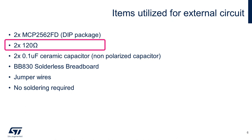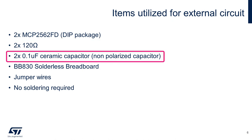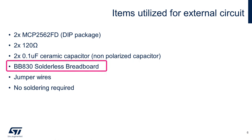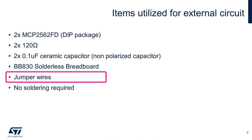Keep in mind that any additional CAN nodes added to the bus — for example node 3, 4, and beyond — will not require any additional resistors. A single 0.1 microfarad ceramic capacitor for each node is used for filtering potential noise on the VDD bus to ground. We'll use a solderless breadboard to place the CAN transceiver, resistors, and capacitors, and jumper wires to connect the Nucleo board and provide power and ground. No soldering will be required for this example project.